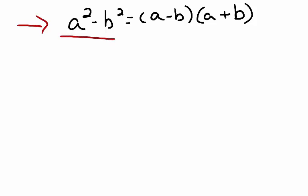If we have a squared minus b squared, each representing our perfect squares separated by a minus sign, it can always be factored as a minus b times a plus b. This is the general formula.